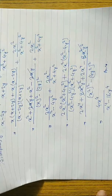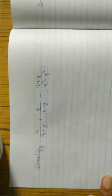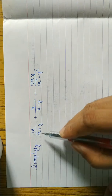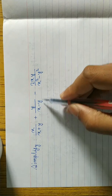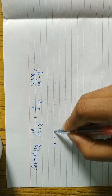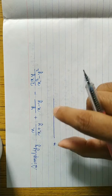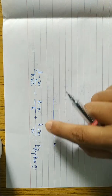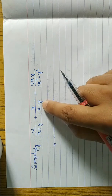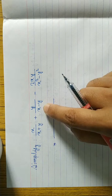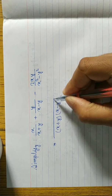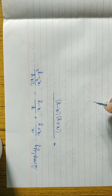Now look at the next similar question. Here we have to simplify: x/(x plus y) plus y/(x minus y) minus 2xy/(x square minus y square). We have three terms and we take the first two terms and find their LCM. There is nothing common between x plus y and x minus y in the denominator, so we take both remaining elements: x plus y and x minus y.